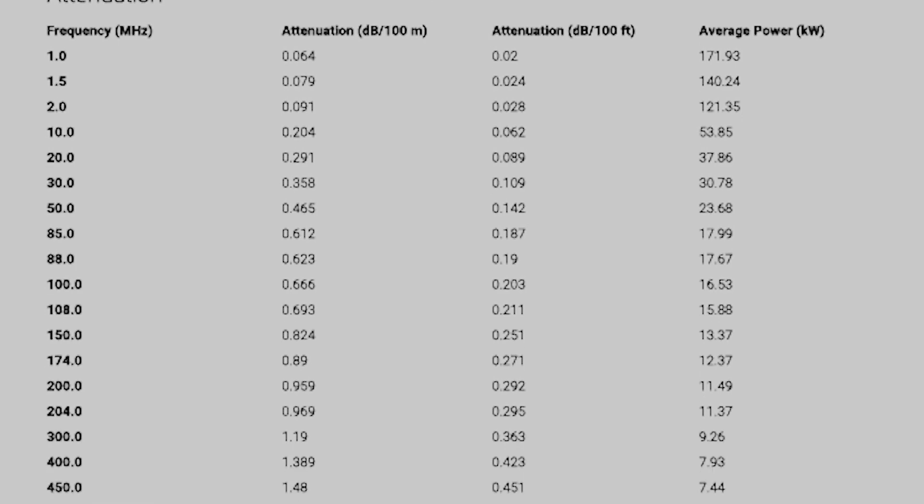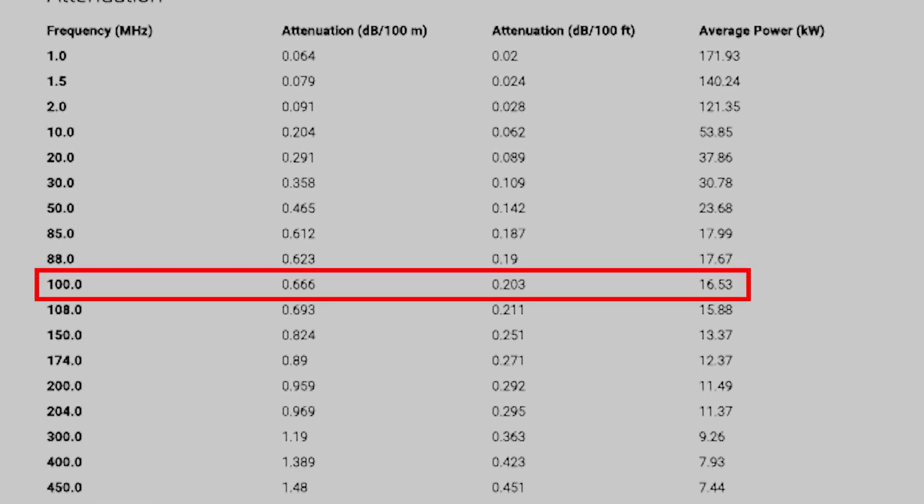Transmission line losses are also expressed in decibels. For any transmission line you can buy, the manufacturer should make available the attenuation profile of the line at a given frequency, expressed in decibels per specific length of line. The standard is decibels per foot or decibels per meter, but for low loss types of transmission line, you may see this expressed as decibels per 100 feet. To get the total line loss for your installation, just multiply the attenuation at the frequency you use by the length of transmission line you have. For example, HJ750A transmission line has a loss of 0.203 dB per 100 feet at 100 MHz. If you have 300 feet of this transmission line and the frequency you use is close to 100 MHz, you multiply 0.203 by 3 and get your total transmission line attenuation of 0.609 dB.